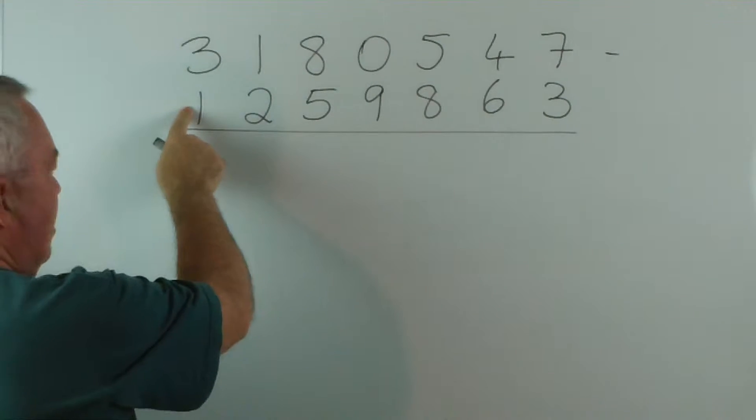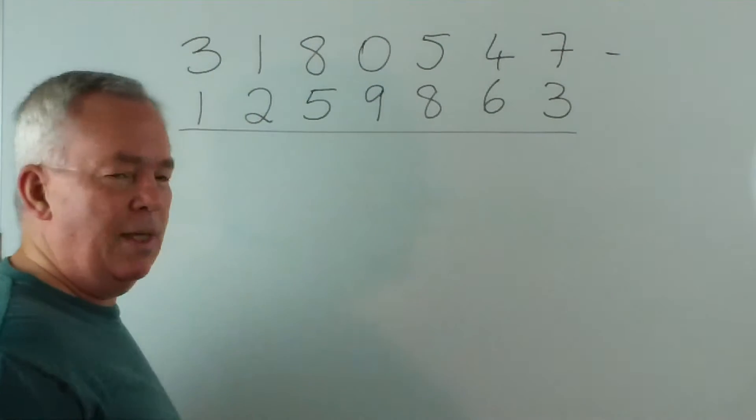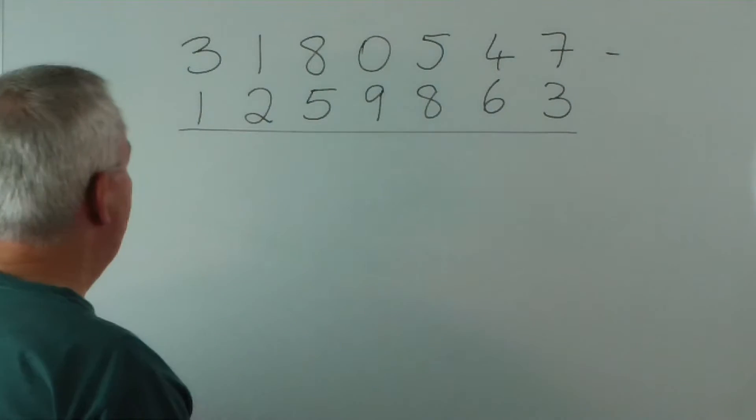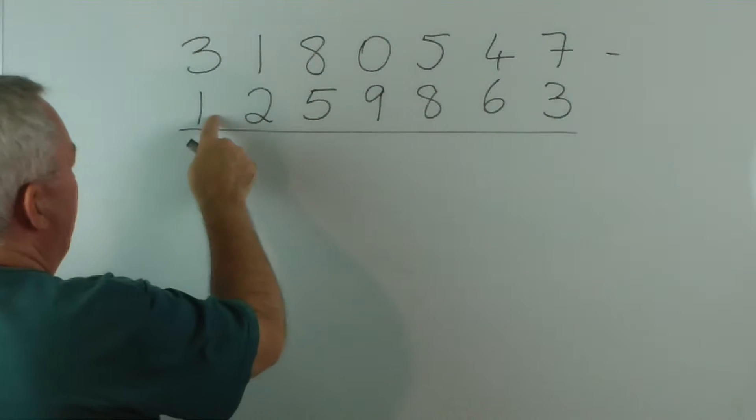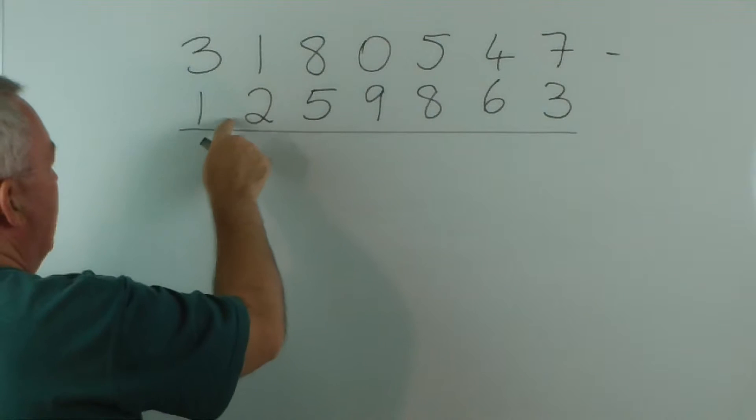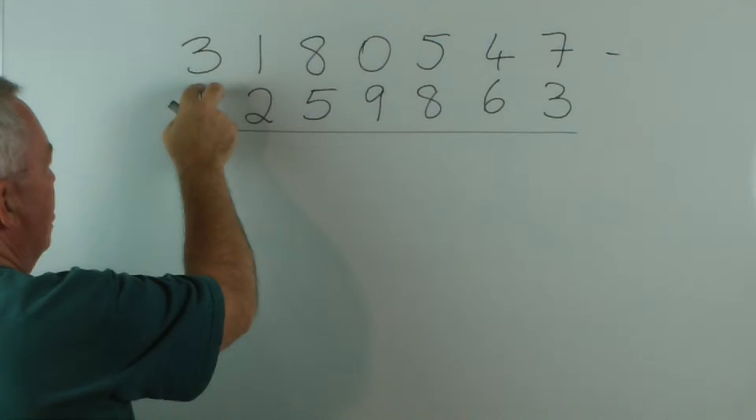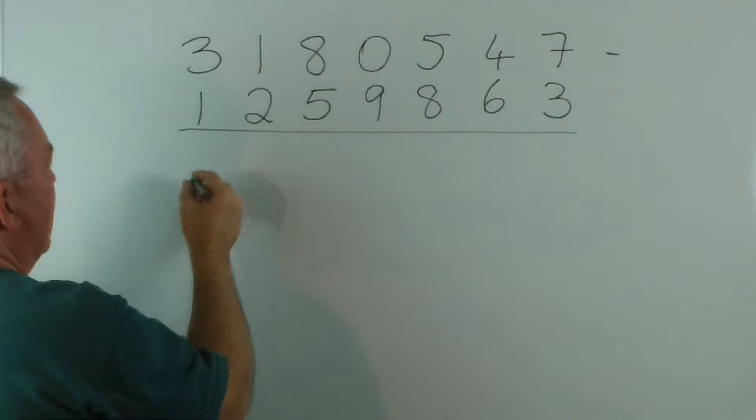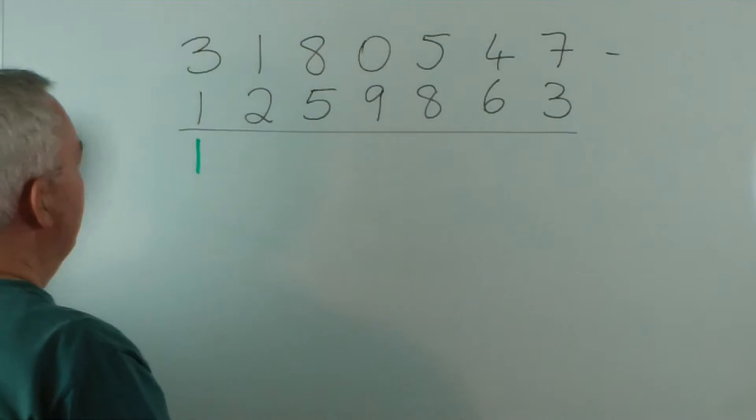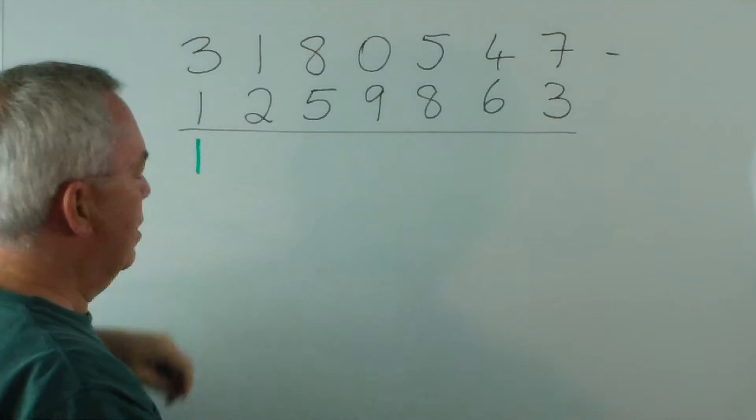We start at this end rather than that end. This is a left-to-right form of subtraction. And we increase this digit by one so it becomes worth two and subtract it from the three and we get one. So, two from three is one.